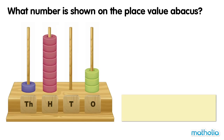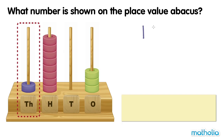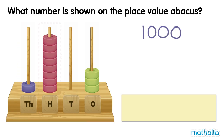What number is shown on the place value abacus? In the thousands place, there is one bead. The bead has a value of one thousand. In the hundreds place, there are eight beads. The beads have a value of eight hundred.